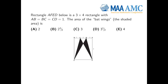First let's read the problem. Rectangle AFED below is a 3 by 4 rectangle with AB equal BC equals CD equals 1. This is a geometry problem, so we also have to stare at the picture to understand. We have this rectangle, which is 3 by 4 — this side is length 3, and this side is length 4.